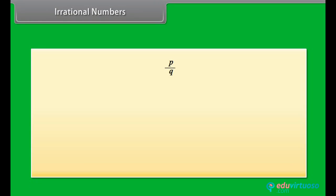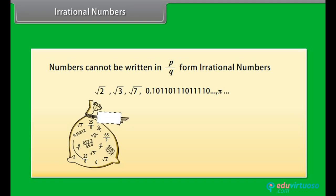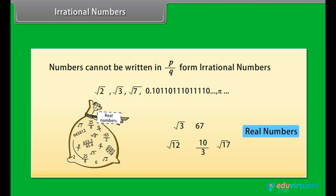You must be wondering if there are numbers which are not in the form of P by Q. Yes, there are numbers which cannot be written in the form P by Q. Those numbers are called irrational numbers. For example, square root 2, square root 3, square root 7, 0.10110111011110..., pi, and so on. If we collect all the rational numbers and irrational numbers and put them in a bag, then there will be no number left on the number line. We call this collection real numbers. Therefore, a real number is either rational or irrational.